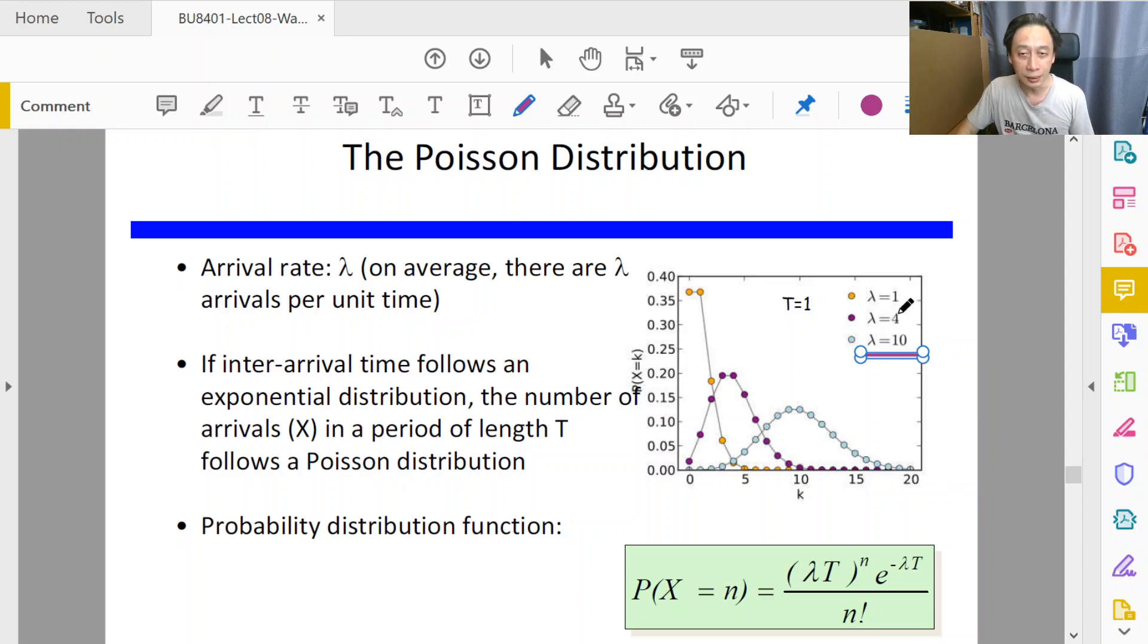So in the case of busy hours, we would use lambda equals 10 to describe that scenario. Now remember, the x-axis—this is a distribution, it's not a time series chart. The x-axis is the number of customers per fixed time interval coming into the bank, and the y-axis is the amount of time or proportion that you see that event happening.